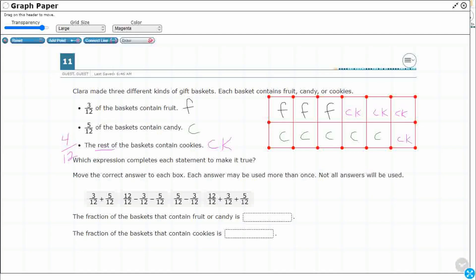So I need to take these expressions. Not all of them are going to be used. The fraction of baskets that contain fruit or candy. Fruit or candy - that's the F, that's the C. One, two, three - three 12ths and one, two, three, four, five - five 12ths. Three 12ths and five 12ths, fruit and candy.